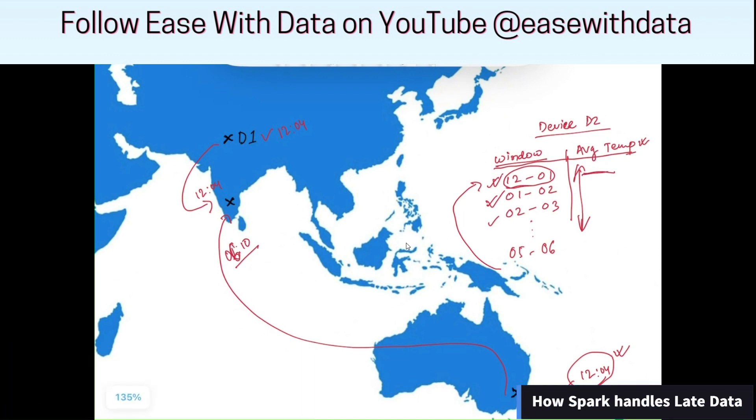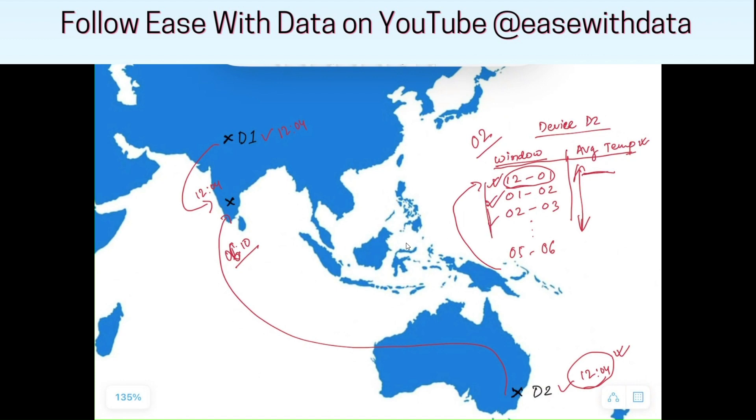In case of stateful processing, we have to define a timeout after which Spark will discard any events that come late. Consider we define that any event that comes after 2 hours will be discarded. Spark will hold the state until 2 hours. If this event arrives late by 2 hours, for example at 2 PM, it will be processed. But if it arrives late by more than 2 hours, then Spark will automatically discard this event. This logic of Spark is handled by utilizing watermarks.